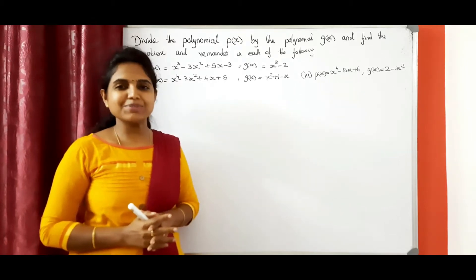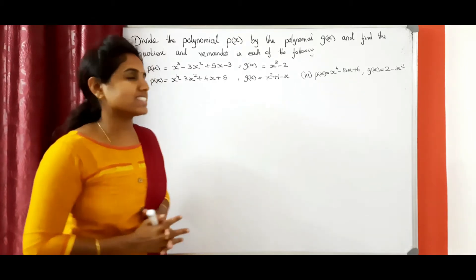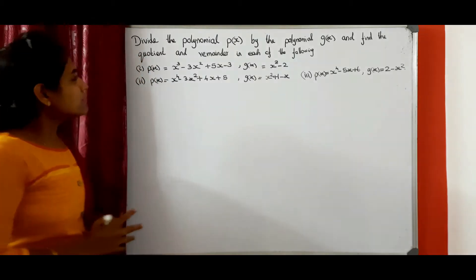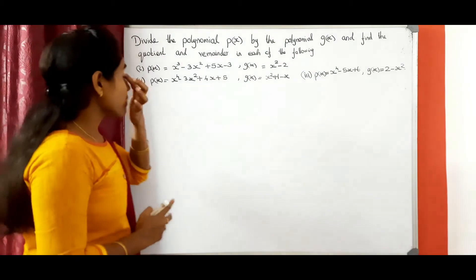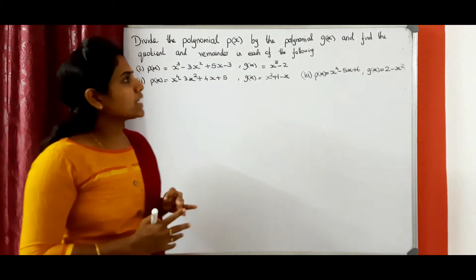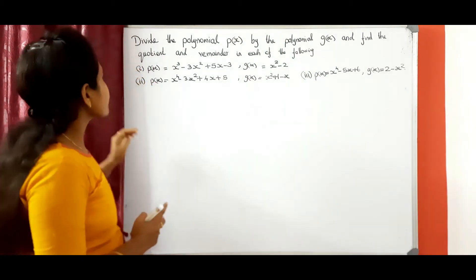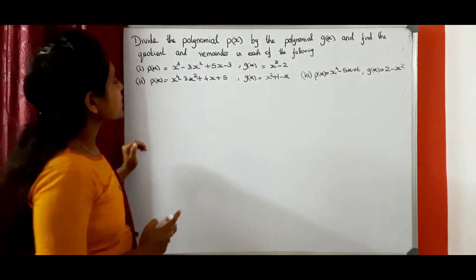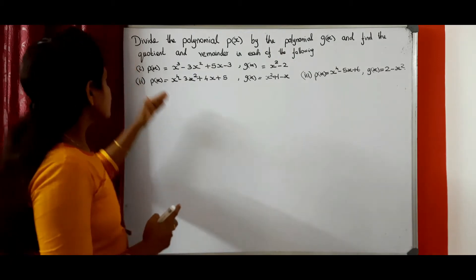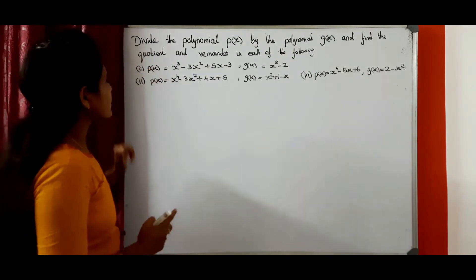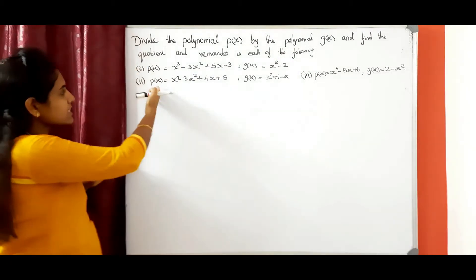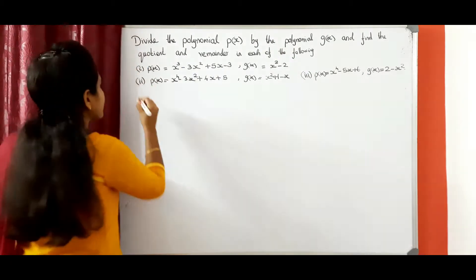Hi students, welcome to class. Let's see the problem: divide the polynomial P of X by the polynomial G of X and find the quotient and remainder in each of the following. The first question we already done in the last class, now we can see the second problem.